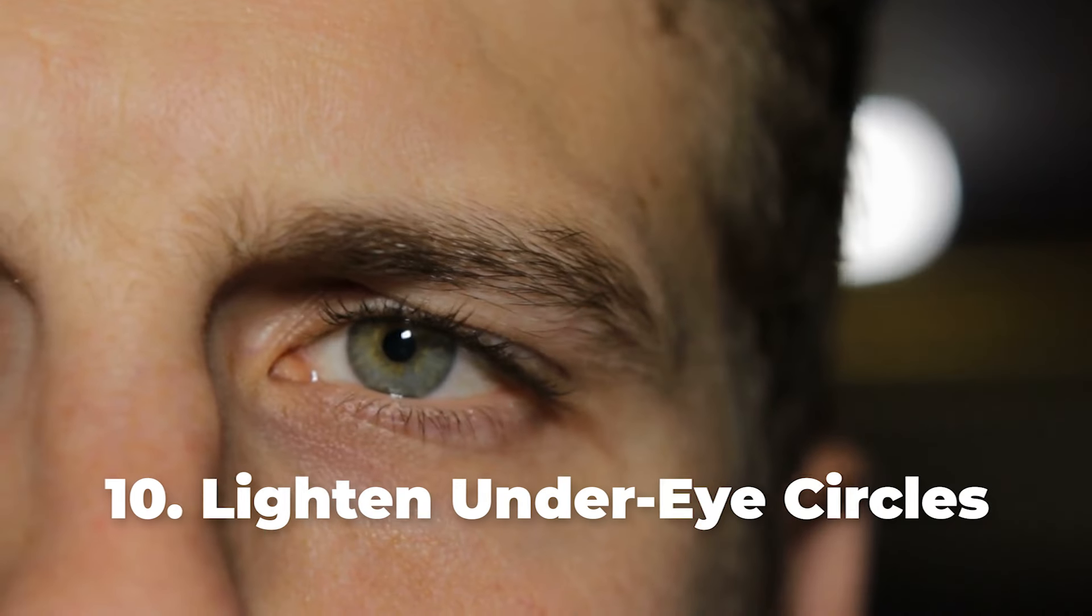Number ten: Lighten Under Eye Circles. Many people are troubled by dark circles under their eyes. Some of this discoloration is hereditary, but it also can be caused by dehydration. Try a gallon of water a day to see if those circles will begin to lighten.